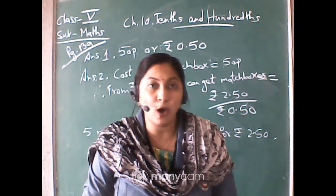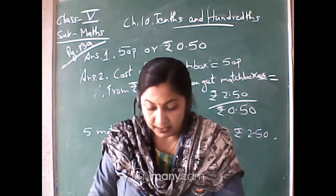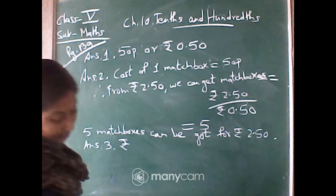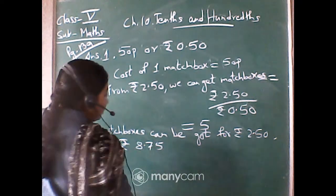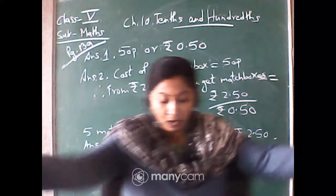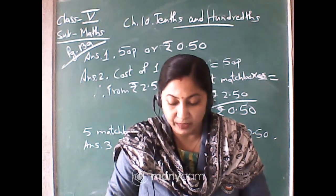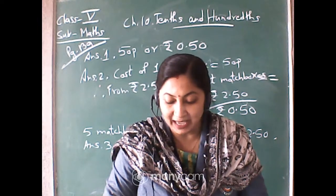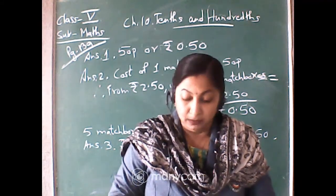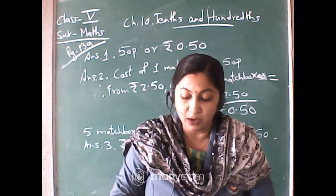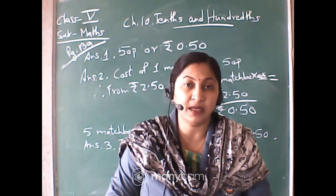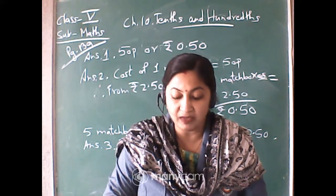Question 3: How many rupees does the soap cost? The cost is given in the picture as 8.75, so cost of soap is rupees 8.75. Now Question 4: Arun wanted to buy a soap. He has one 5-rupee coin, two 1-rupee coins, and four half-rupee coins. Write in rupees what money he will get back. First calculate how much money Arun has, and then find what money he will get back.